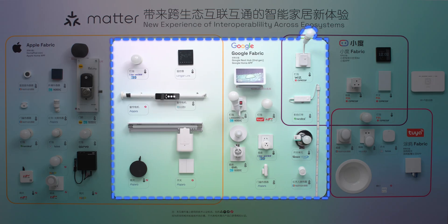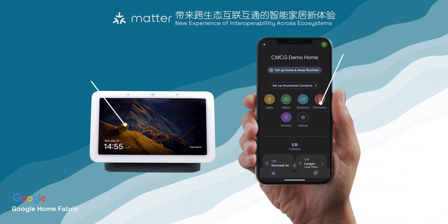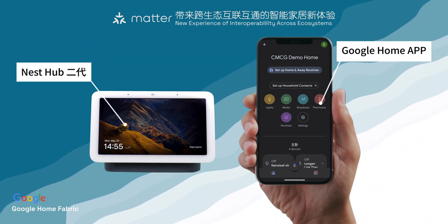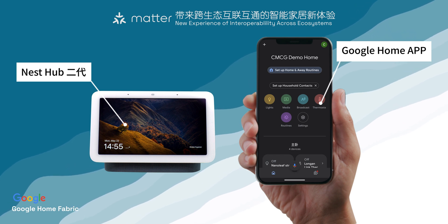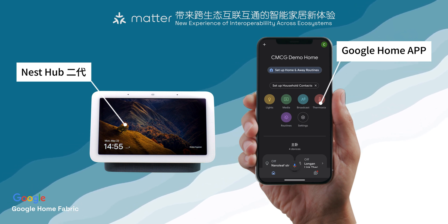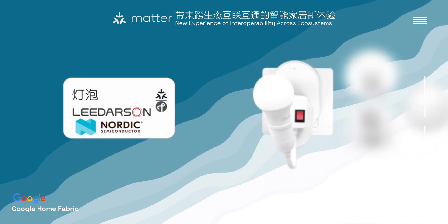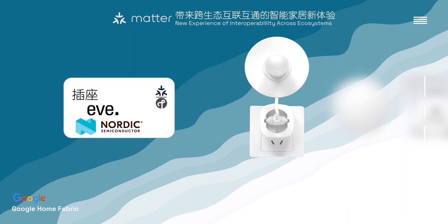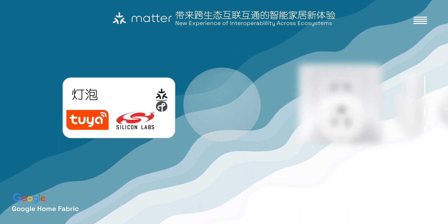The Google Home fabric uses the Google Home app and Nest Hub second generation as commissioner and controller. The connected devices, in addition to those also in the Apple Home fabric, include Liderson bulbs using Nordic chips, Eve plug, and Tuya bulb using Silicon Labs chip.